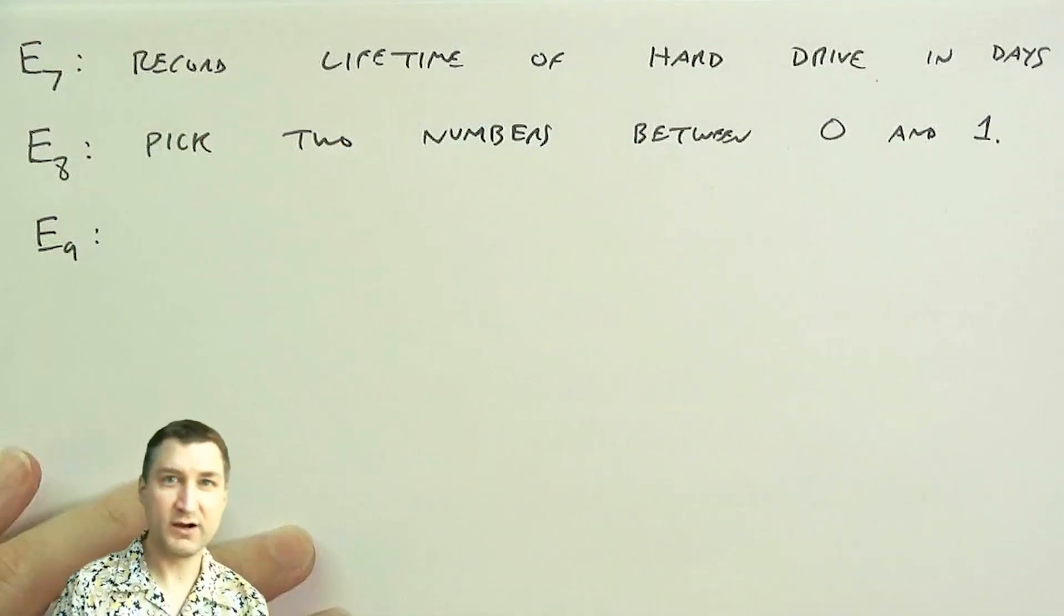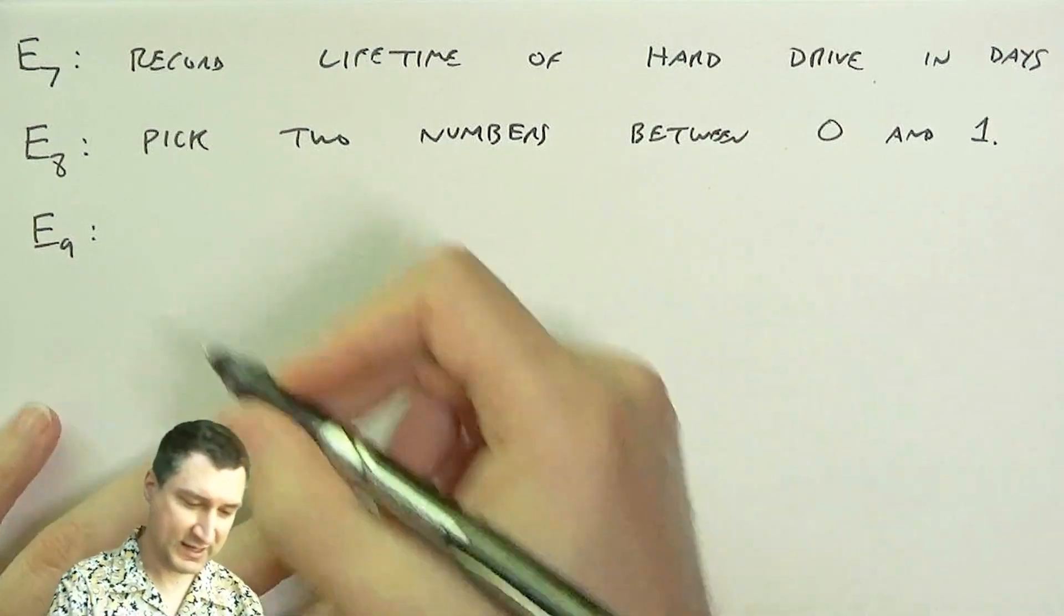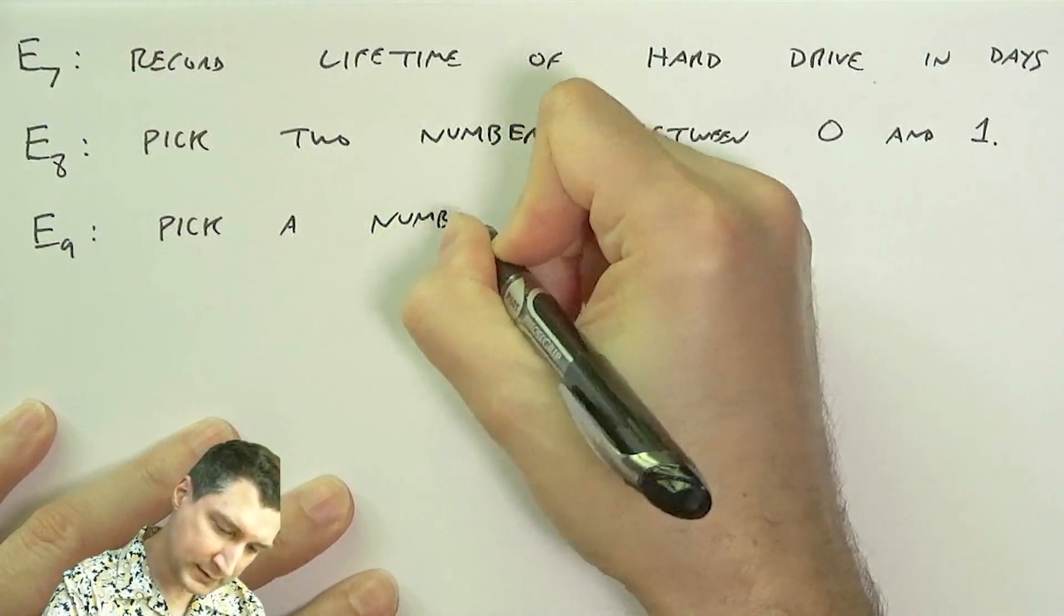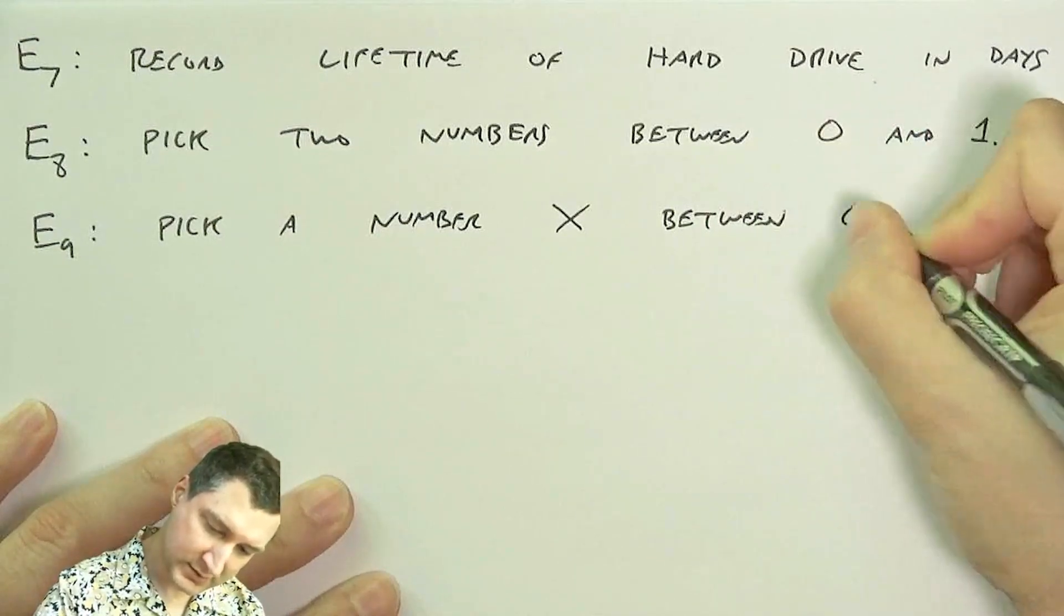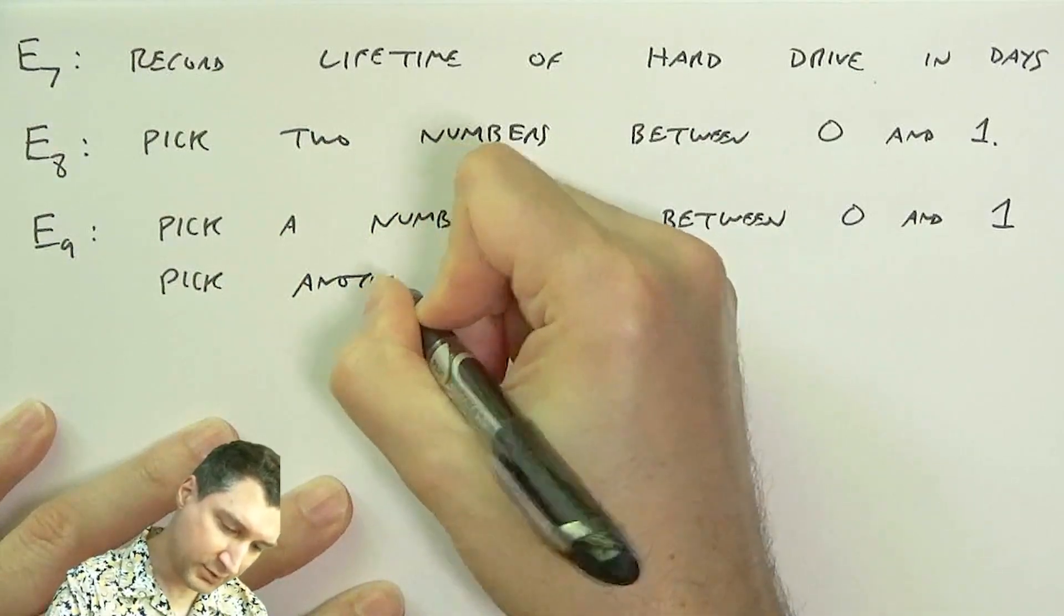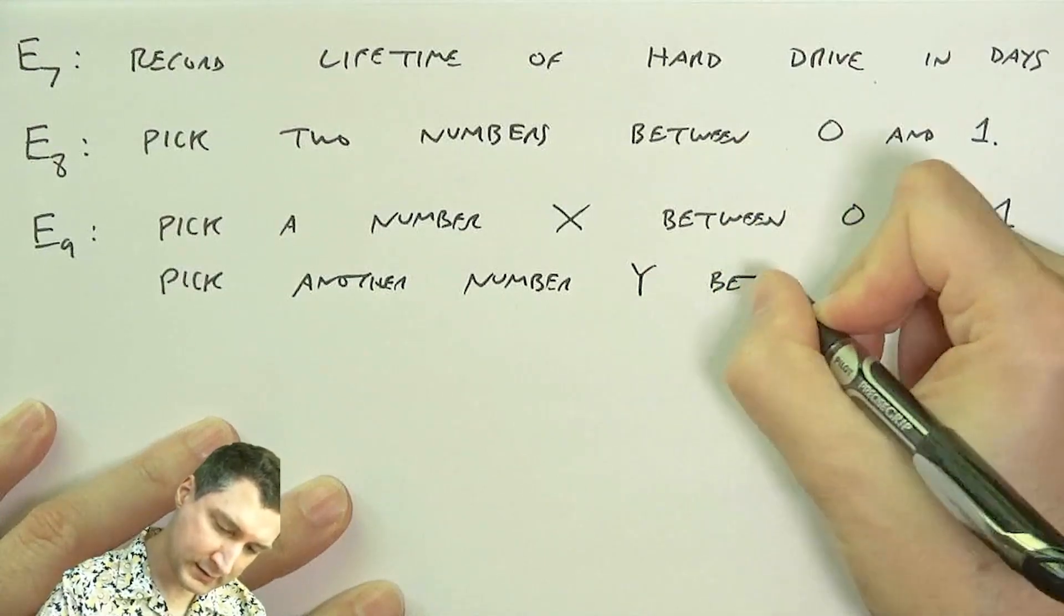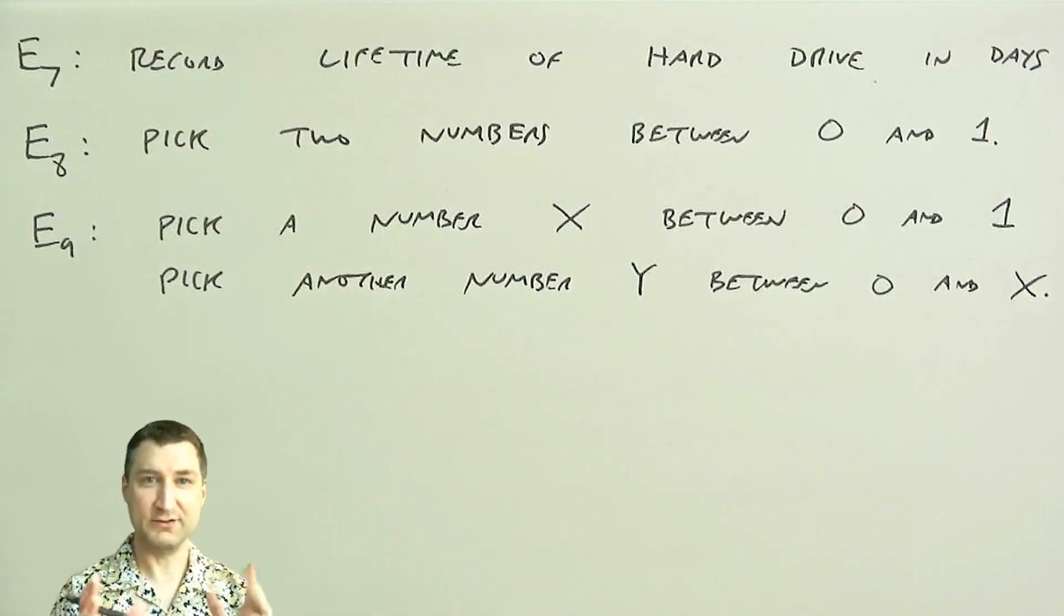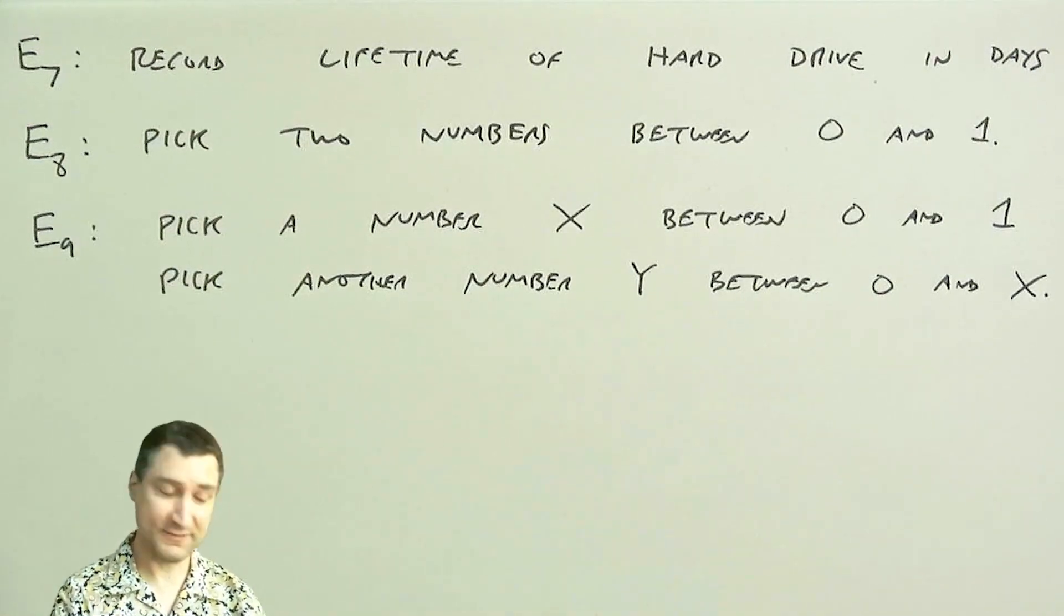Or we could have a procedure where the result kind of depends on previous little sub-experiments, right? So I could say pick a number x between 0 and 1, and then pick another number y between 0 and x. So I have a two-dimensional kind of outcome, and the second dimension of that depends on the first thing that I saw.